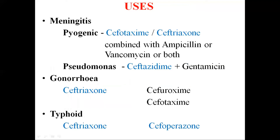For pyogenic meningitis caused by H. influenzae, Neisseria meningitidis, or Streptococcus pneumoniae, cefotaxime or ceftriaxone are preferred because they have good CNS penetration. These parenteral cephalosporins, due to their increased CSF levels, exert a bactericidal action. They can also be combined with ampicillin or vancomycin or both. Against Pseudomonas meningitis, ceftazidime plus gentamicin can be used.